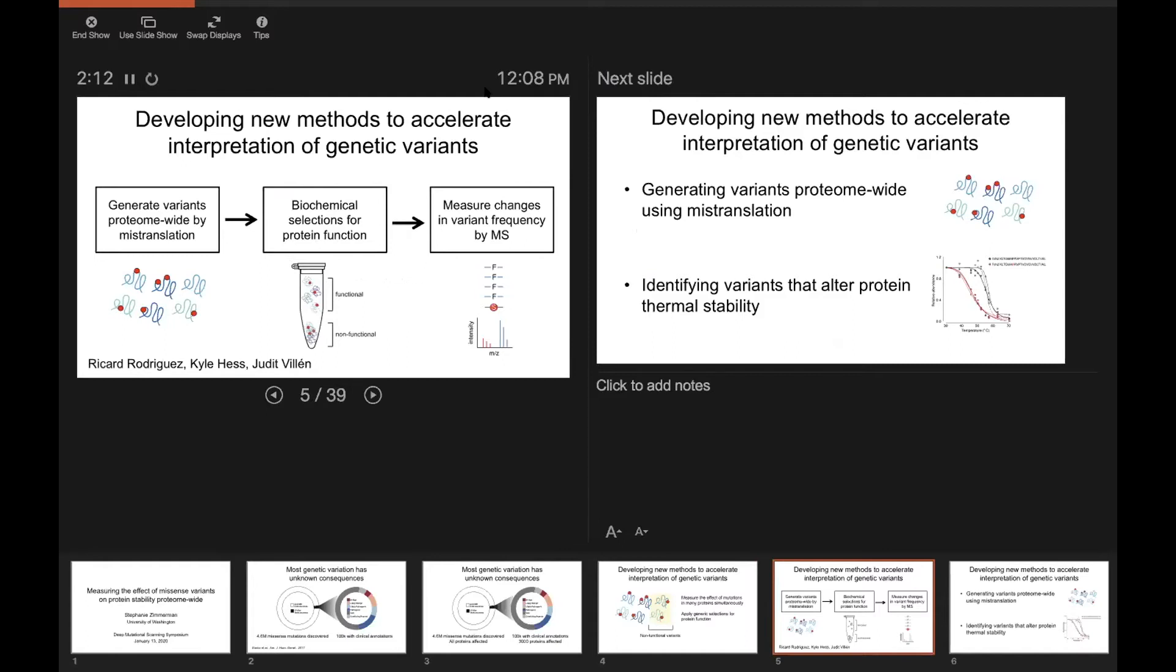As I said, we apply these generic biochemical selections to protein function to the entire proteome in a single pool. And then, because these variants exist only at the protein level, we measure their changes in frequency by mass spectrometry.